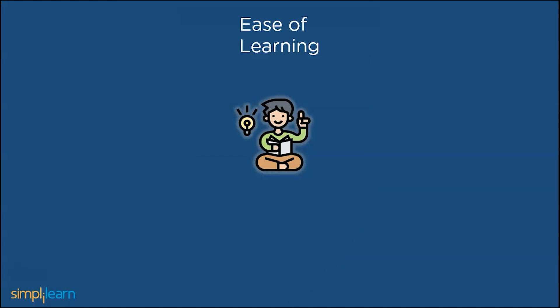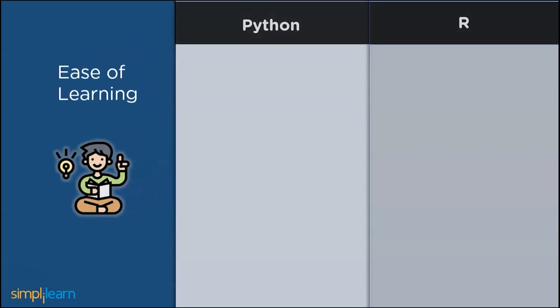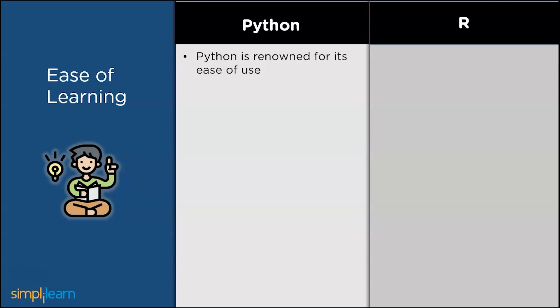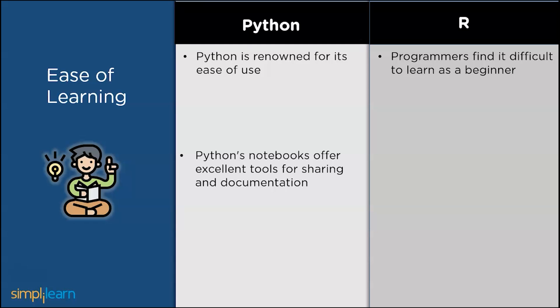First one is learning preferability or ease of learning. Python is renowned for its ease of use. Python's notebooks offer excellent tools for sharing and documentation despite the fact that there are currently no GUIs for them. Programmers and students find R as a difficult language as a beginner. This implies that programmers must devote a significant amount of time to learning and comprehending R coding.